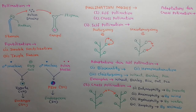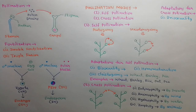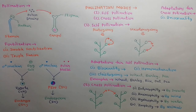Next, we learn about the adaptations for cross-pollination. The first adaptation is unisexuality. Many crops have unisexual flowers and are either monoecious or dioecious. Cross-pollination mainly occurs in these crops due to unisexual flowers.